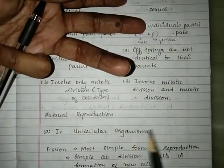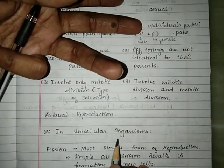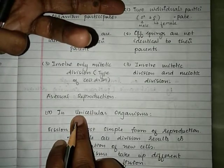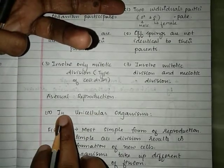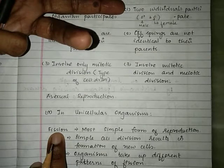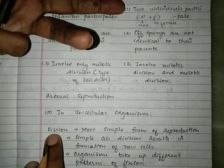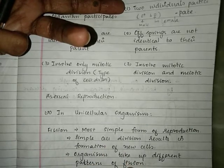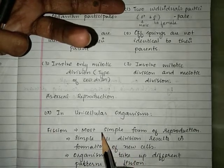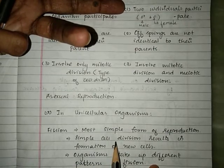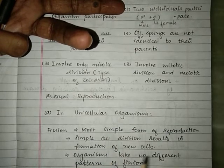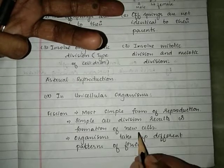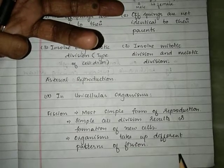First, asexual reproduction in unicellular organisms — organisms made of a single cell. In unicellular organisms, the most common type of reproduction is fission. Fission means breaking of the cell into two equal halves. It is a simple form of reproduction where one cell breaks up into two new cells, representing the next generation.